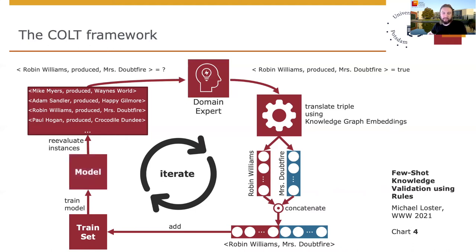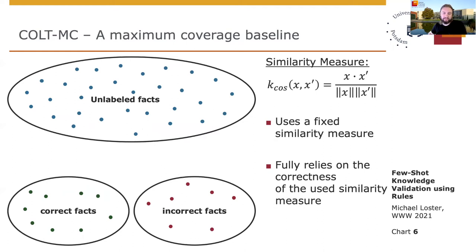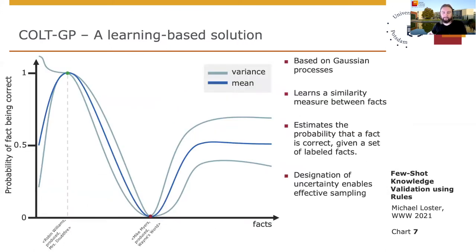Next, we take a look at the models that allow us to learn the truth values of a fact. Our first model is called COLD-MC and represents a greedy baseline based on maximum coverage. Each point in this image represents the previously generated vector representation of a fact. Essentially, it can be thought of as a one nearest neighbor classifier that compares a selected fact to all previously evaluated facts, determines its nearest neighbor by means of a chosen similarity measure, and assigns the same label as its neighbor to the selected data point. COLD-MC determines the similarity of two facts based on their cosine similarity, using a fixed similarity measure and relying completely on the correctness of the determined similarity.